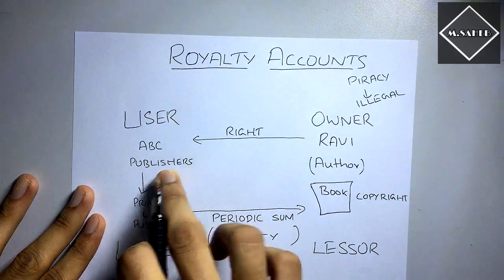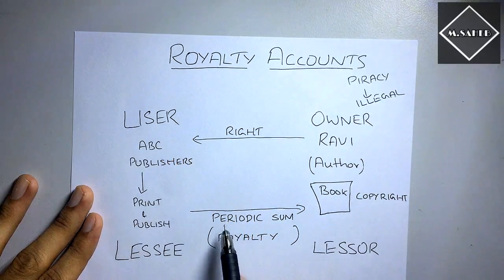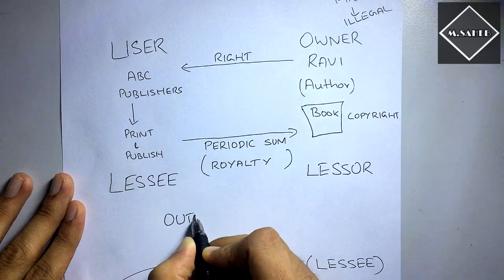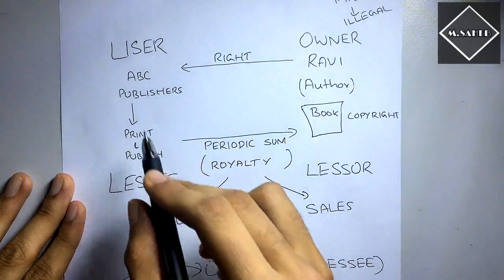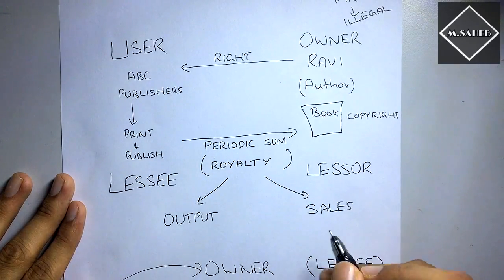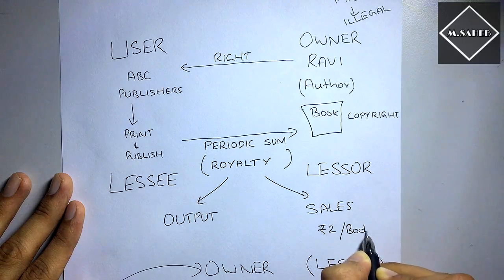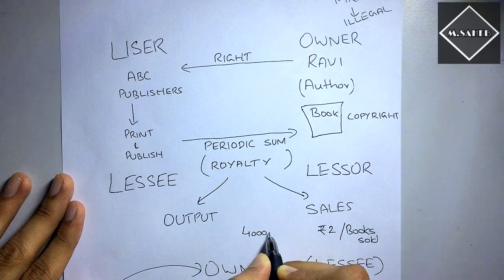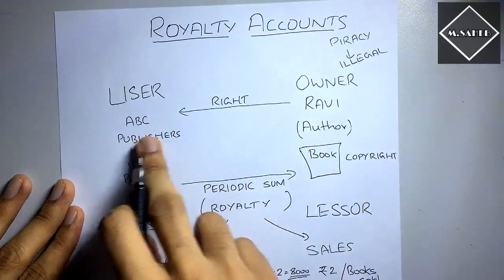So now ABC Publishers is using the right — lessee. And Ravi is granting the right, he is the owner of the right — so he is lessor. Now Ravi asked ABC Publishers: how are you going to pay me? Royalty is paid on the basis of either output or sales. The ABC Publishers say: we will pay you on the basis of sales — how many books we sell, that much we will pay. So let's say two rupees per book sold. If they sold four thousand books, four thousand into two equals eight thousand rupees, which will be paid to Ravi from ABC Publishers.